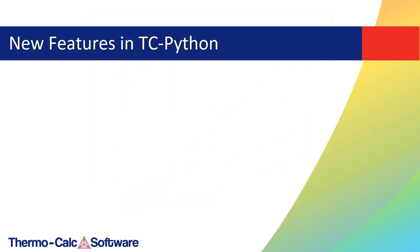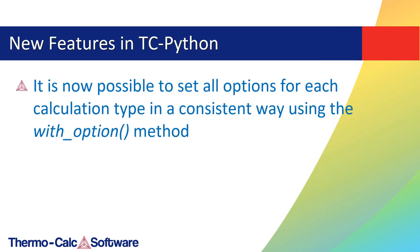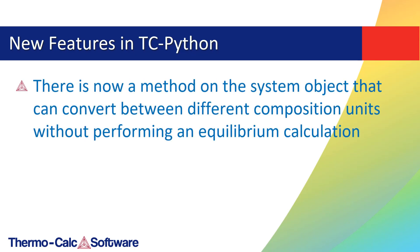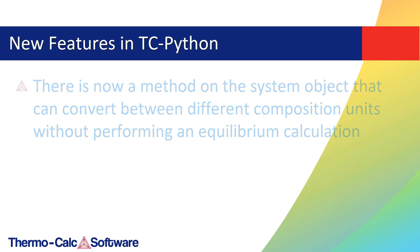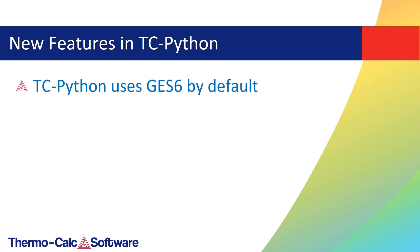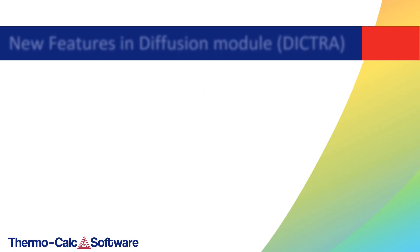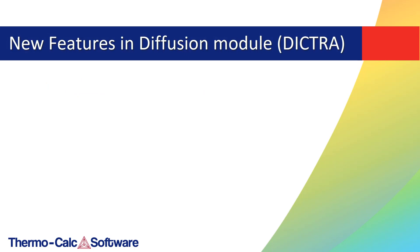Some new features have been added to TC Python in the 2019b release. It is now possible to set all options for each calculation type in a consistent way using the with_option method. Additionally, there is now a method on the system object that can convert between different composition units without performing an equilibrium calculation, making the conversion much faster. Also, TC Python now uses GUESS 6 by default.